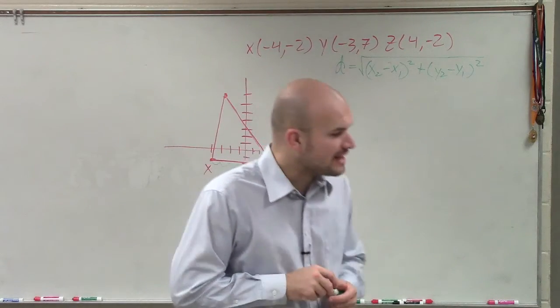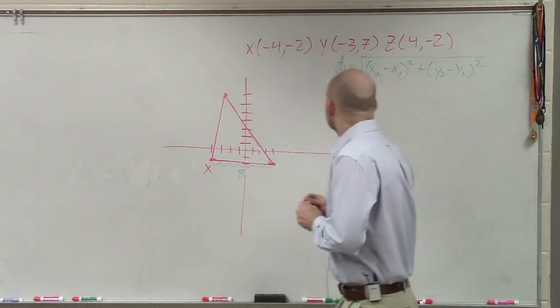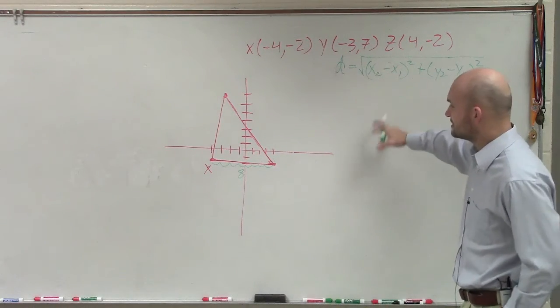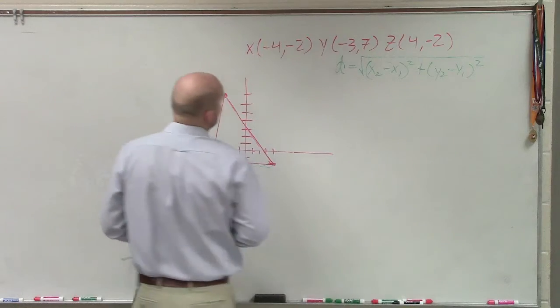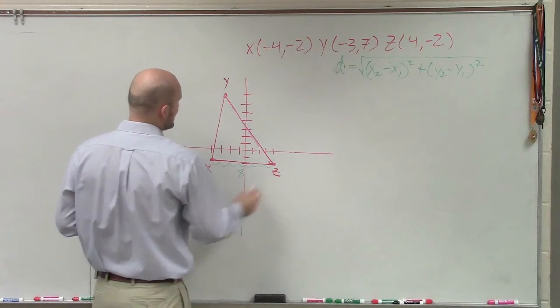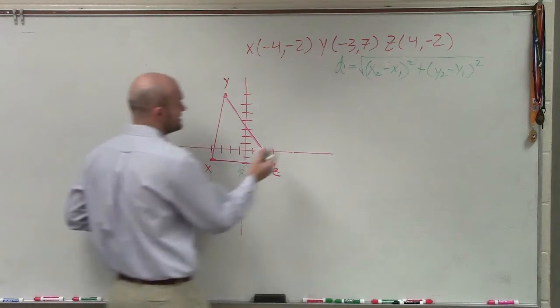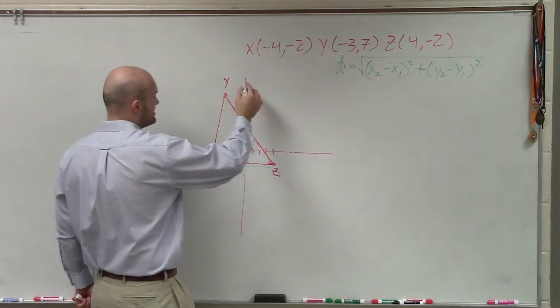So Damon, if you wrote down the wrong problem, go ahead and write this one down as well. So now what we're going to do is we need to find the distance. Well, oh, I didn't label these. That's x. That was y. And that's z. All right, so we already know the distance between x and z. Let's find the distance between x and y.